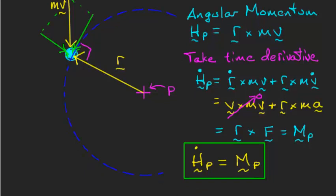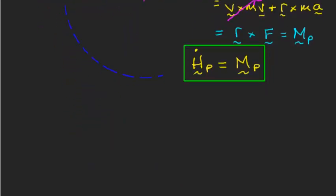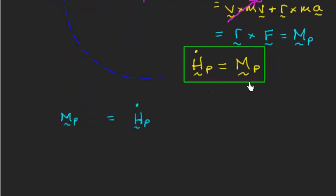All right, there's one more thing I want to do in this theory video. Let me scroll down so I can work. I'm going to take this result that we just derived and rewrite it. I'm just going to put the moment on the left side and the time derivative of the angular momentum on the right side. And what I'm going to do is I'm going to integrate both sides with respect to time.